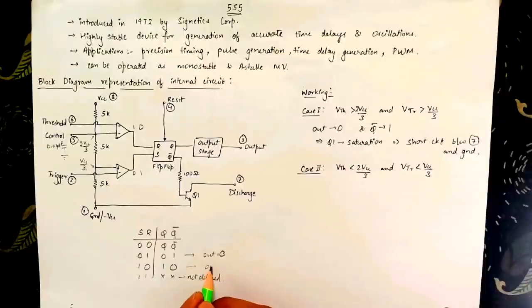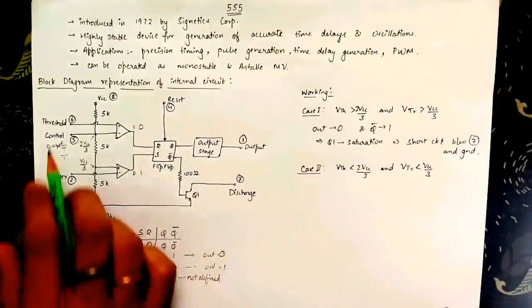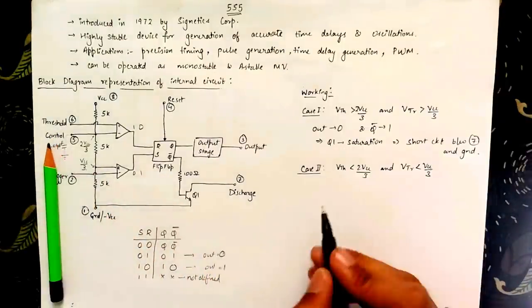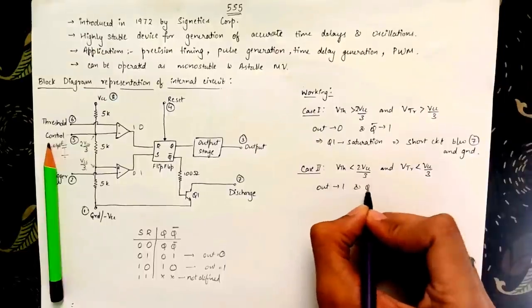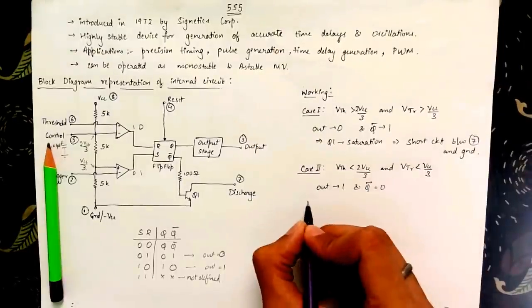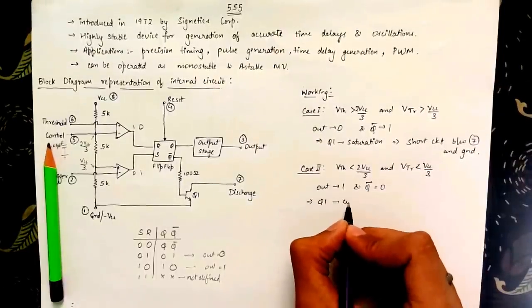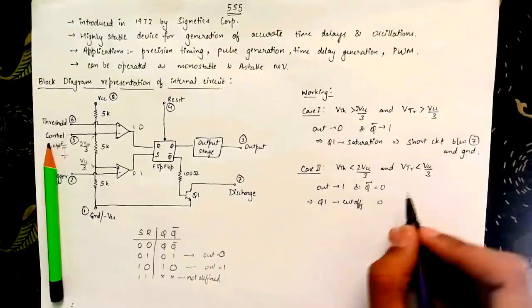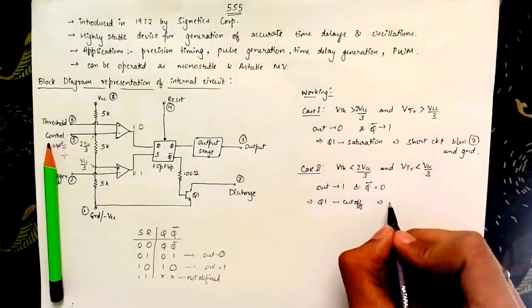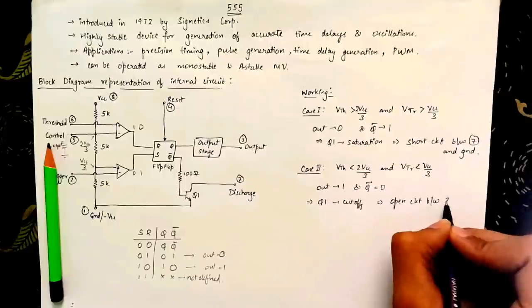0 and 1 on the RS input leads to this case where output is logic 1. Therefore the output of the 555 IC is logic 1 and the q bar is set to logic low. When q bar is 0 the Q1 transistor is in cutoff and this leads to an open circuit between the 7th pin and the ground pin.